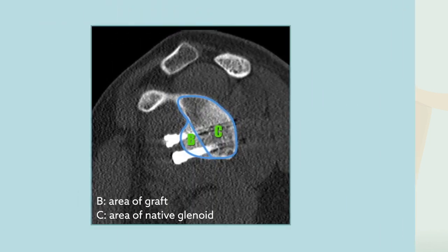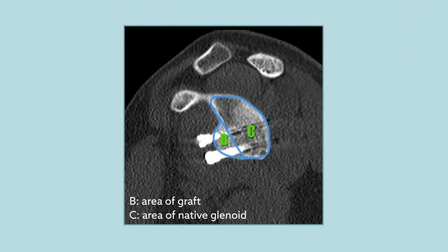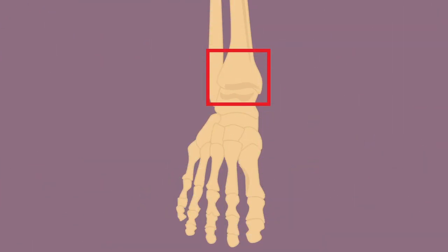To address these concerns, researchers compared patient radiological outcomes in the context of both graft types following glenoid reconstruction to treat anterior shoulder instability with significant glenoid bone loss. Their results suggest that tibial allografts are a promising option to recreate glenoid bony morphology.